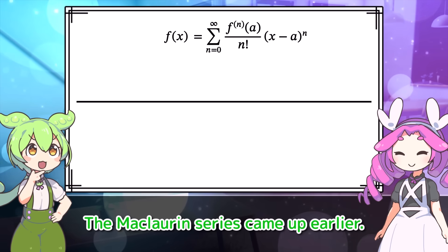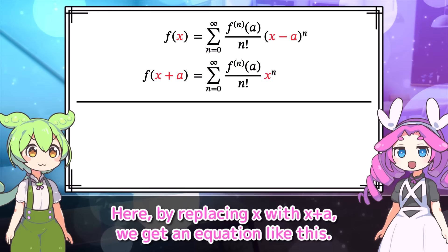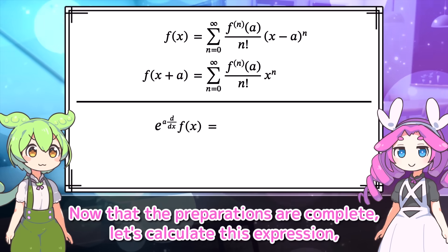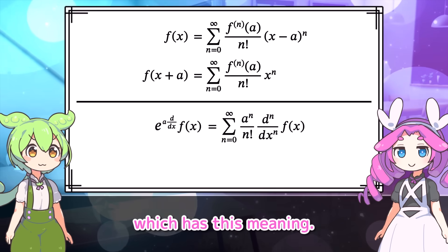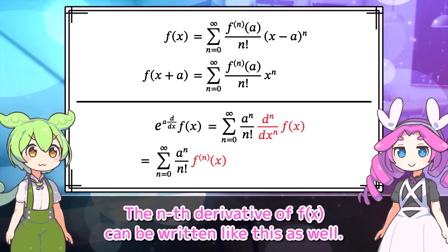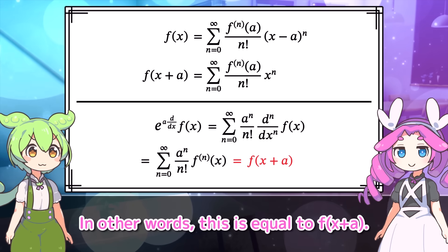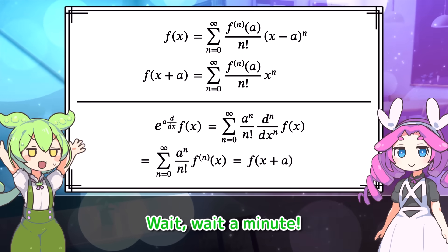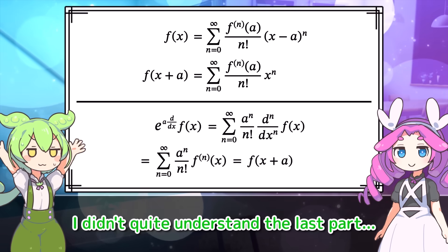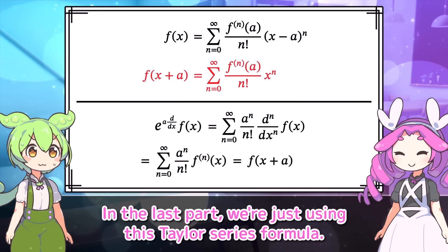The Maclaurin series came up earlier. Here, by replacing X with X plus A, we get an equation like this. Now that the preparations are complete, let's calculate this expression, which has this meaning. The Nth derivative of F of X can be written like this as well. In other words, this is equal to F of X plus A. Wait, I didn't quite understand the last part.